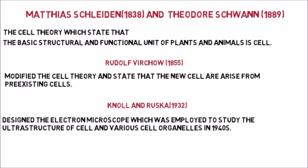To briefly revise the discovery of the cell: first in 1665, Robert Hooke discovered the cell. Then in 1674, Anton von Leeuwenhoek discovered free-living cells in pond water. In 1831, Robert Brown discovered the nucleus. In 1839, Purkinje discovered protoplasm. Then Schleiden and Schwann stated the cell theory. Rudolf Virchow added a point to the cell theory that every cell arises from a pre-existing cell. And lastly, Knoll and Ruska discovered the electron microscope in 1932.